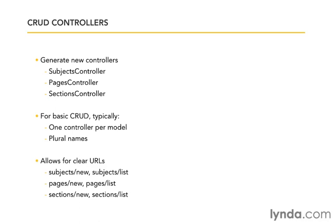This also allows for very clear URLs that define what we're working with and what action we want to perform: subjects/new, subjects/list, pages/new, pages/list, sections/new, sections/list. Throughout this chapter, to keep things moving along, I'm going to cut and paste a lot of code, especially HTML, so remember you can pause the video if you need to copy something down. Let's jump over to the command line and create the subjects controller to get started.